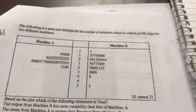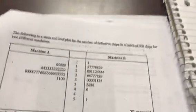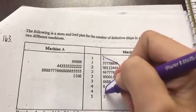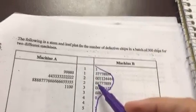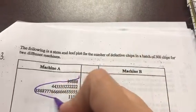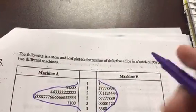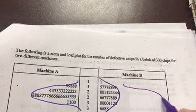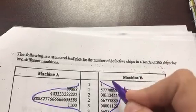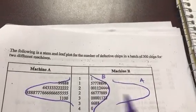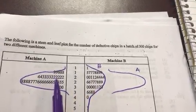All right, so problem 163 gives us back-to-back stem-and-leaf plots. What I always do is draw out what the distribution looks like, and I also flip this one over because this is the mirror image. I want to redraw the distribution of A here and the distribution of B, and I'm going to be comparing them.